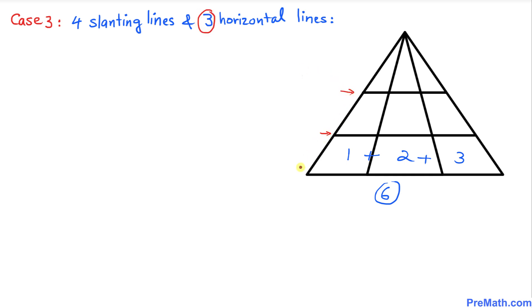One, two, and three. Therefore we are going to multiply this number six by three, since we have three horizontal lines. So three times six is going to be 18.